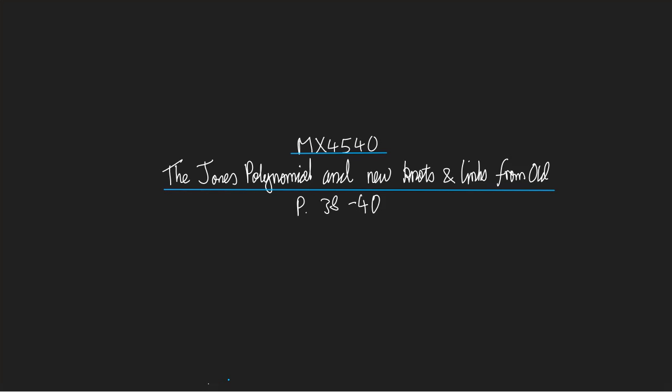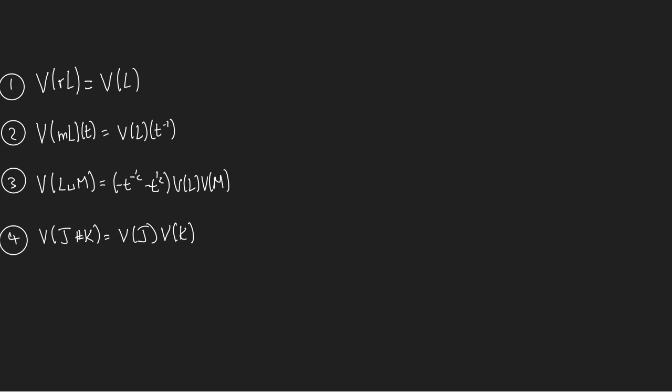Welcome to a mini lecture about the Jones polynomial and new knots and links from old. When I say new knots and links from old, I mean the various methods we have to get new knots and links from old ones - like taking reverses, taking sums, taking mirrors, and so forth. We're going to see how those affect the Jones polynomial, which you can read about across pages 38 to 40. There are four results I want to tell you about.